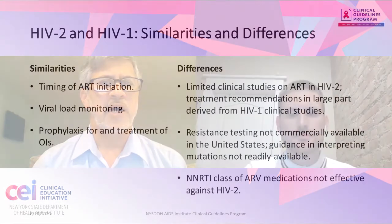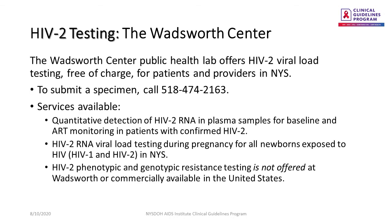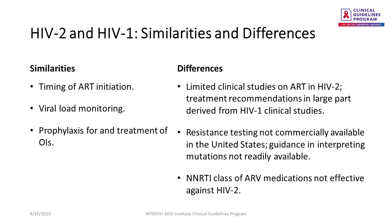And what are some of the similarities and differences when treating patients with HIV-1 versus those with HIV-2? So let's first discuss similarities. Treatment is indicated for anyone diagnosed and should be initiated as soon as possible, preferably at the first visit. Secondly, viral load monitoring should be used to assess treatment effectiveness. We're very fortunate that in New York State, an HIV-2 viral load can be obtained by sending a blood sample to the Health Department's Wadsworth Laboratory. Obtaining an HIV-2 viral load is a necessary and required step to effectively manage HIV-2 infection. And lastly, prophylaxis for and treatment of opportunistic infections are the same.